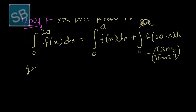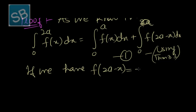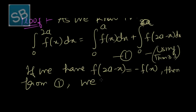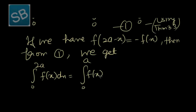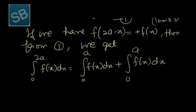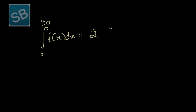Case 1: If f(2a minus x) = f(x), then from the theorem 3.3 result we get the integral from 0 to 2a of f(x) dx equals the integral from 0 to a of f(x) dx plus the integral from 0 to a of f(x) dx — replacing f(2a minus x) by f(x) — giving us 2 times the integral from 0 to a of f(x) dx.